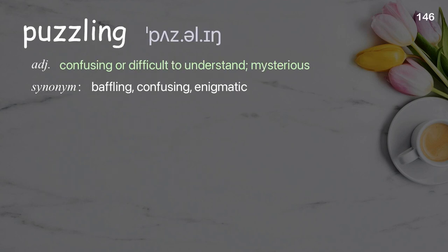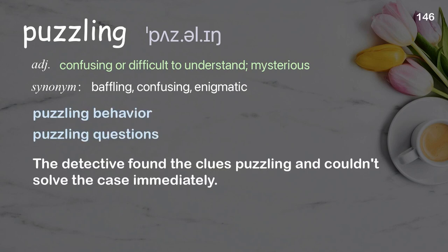Puzzling: confusing or difficult to understand; mysterious. Examples: puzzling behavior, puzzling questions. The detective found the clues puzzling and couldn't solve the case immediately.